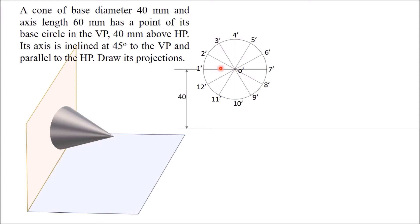Lines such as O'-1', O'-2', etc. represent the generators of the cone. To draw the top view, project the end points of the end generators — points 1' and 7'. Similarly, project O', and from this point draw the axis of the cone which is 60 mm long. Mark this apex point as O.